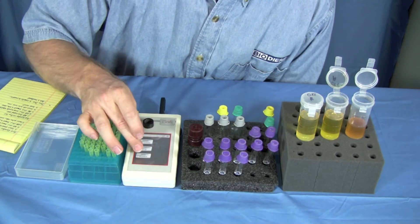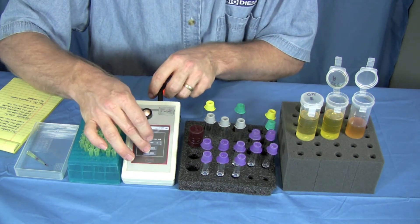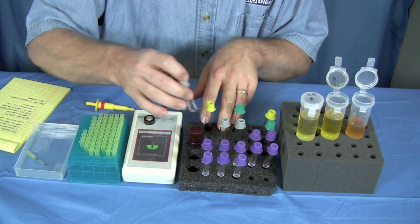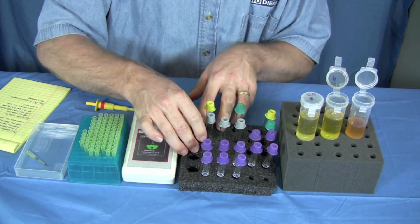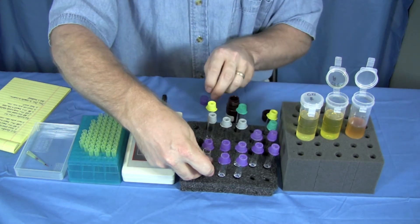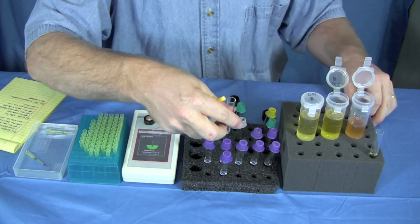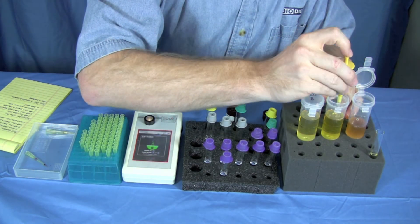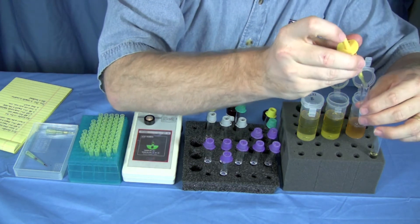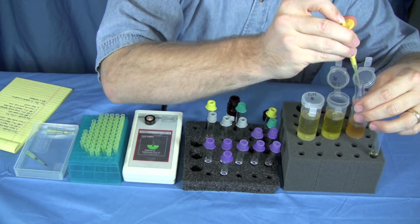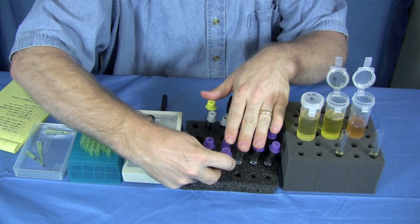To start this test we press the acid number button on the machine, push run test and we're going to put a blank in, pull the blank out, remove the tip. Use 150 microliters of this sample. Put that in and we'll prepare one more.